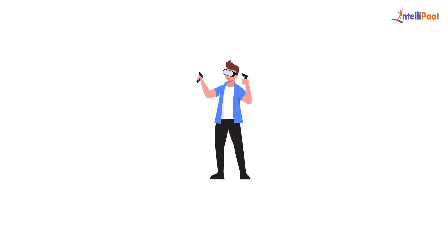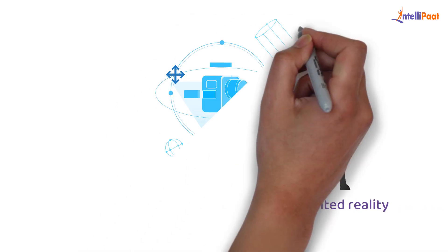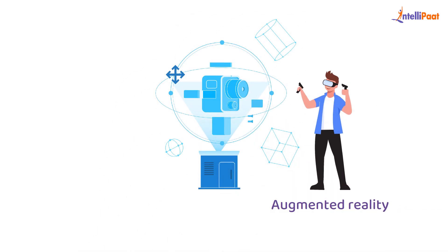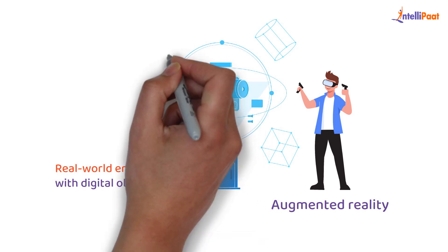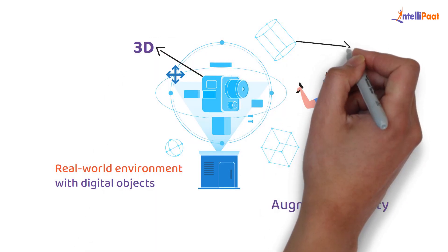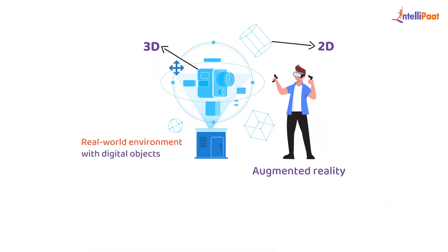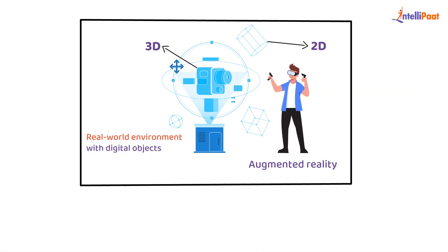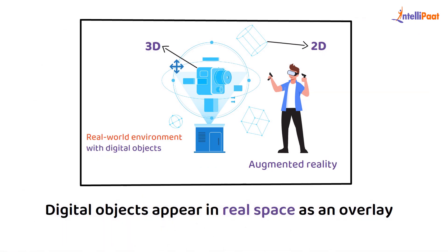Augmented reality, or AR, combines a real-world environment with digital objects, which are typically rendered in 3D, though some applications also use 2D. The digital objects appear in real space as an overlay.